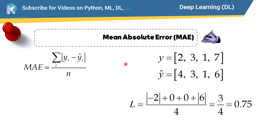Now let's talk about another loss function for the regression problem. First, we calculate the error and then take the absolute value of that error — this is called the absolute error. Then we take the average of these absolute errors, so it is called mean absolute error, or MAE.